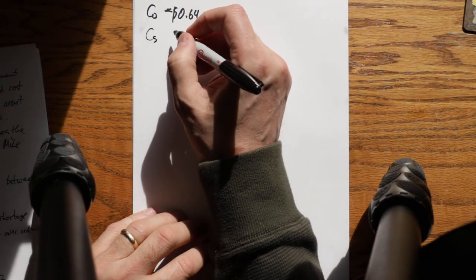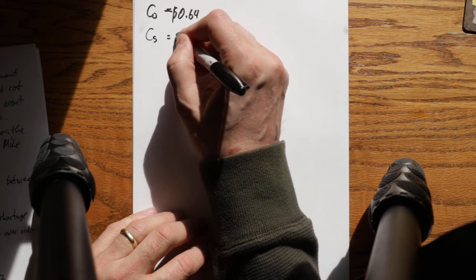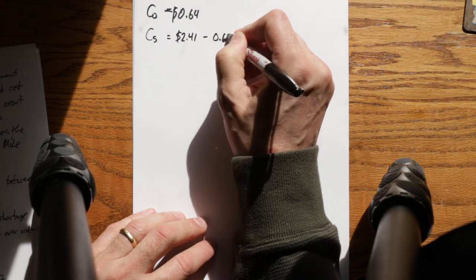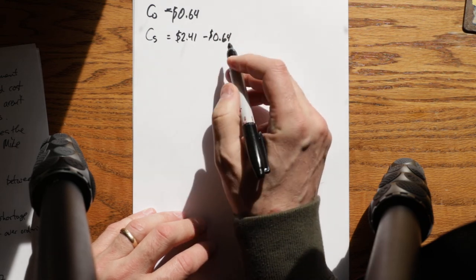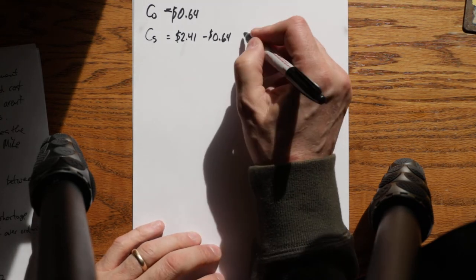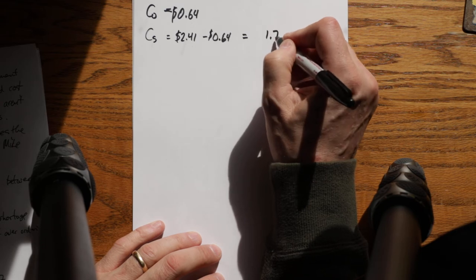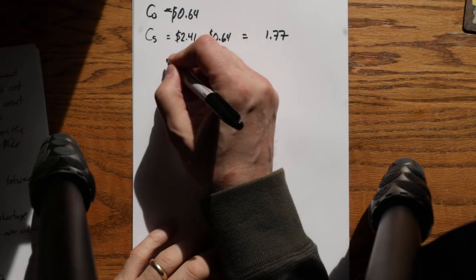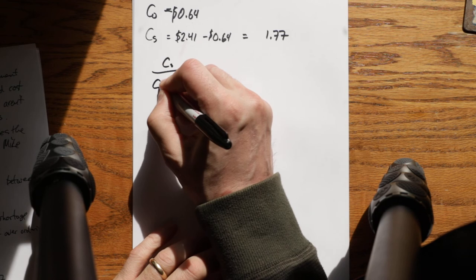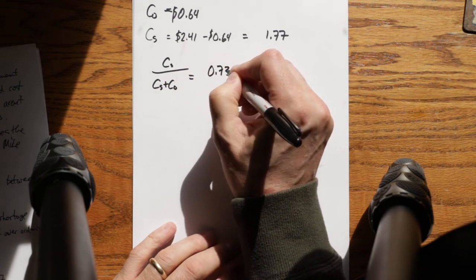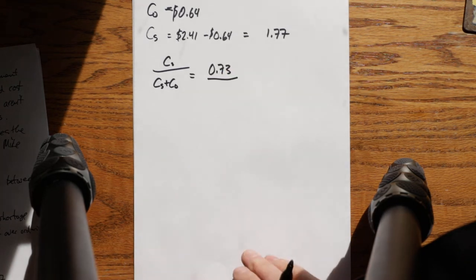Cost of shortage is equal to $2.41 minus $0.64, because if I'm short it means I haven't spent the 64 cents. So actually what I'm losing is the margin I would have made on that newspaper. In this case, CS over CS plus CO is equal to 0.73. That's what's called your critical fractile.